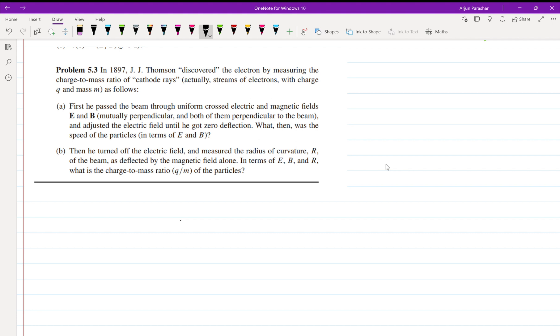So what he does is he passed the beam through uniform electric and magnetic fields. The force acting on the beam will be both from the magnetic field and the electric field: q E plus v cross B. This is the total force when a beam of charged particles moves through uniform crossed electric and magnetic fields.